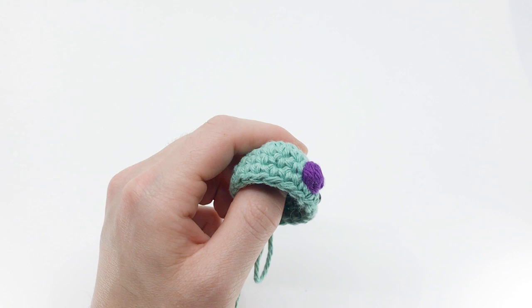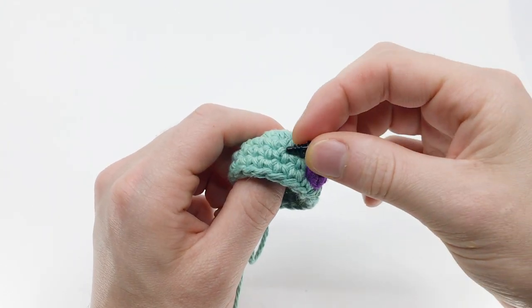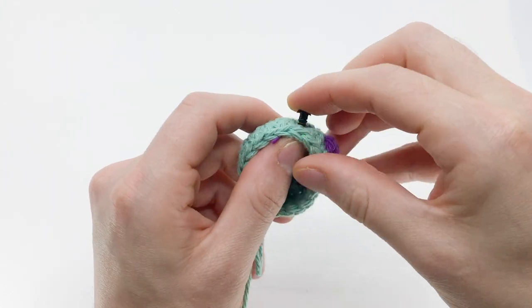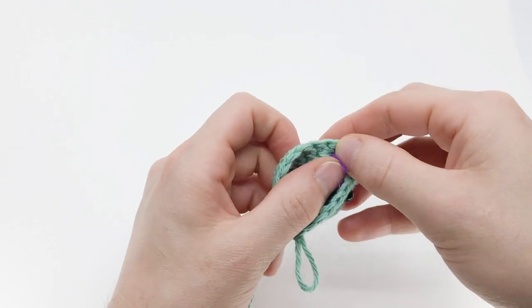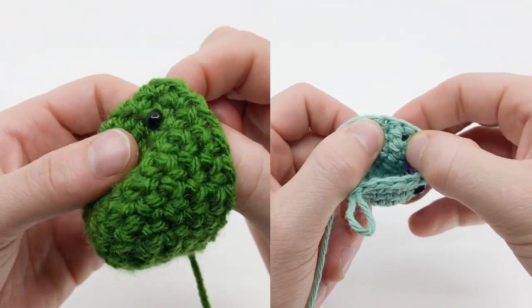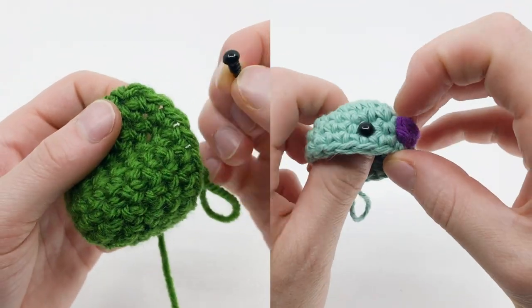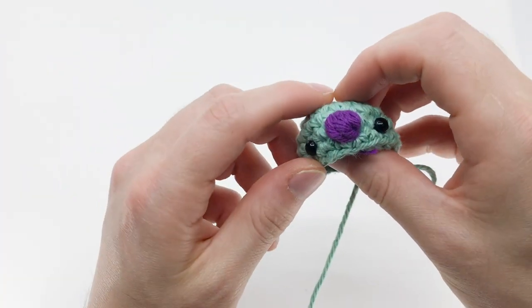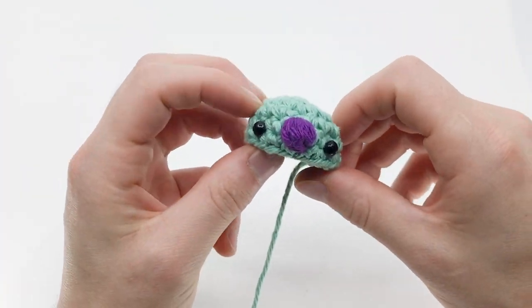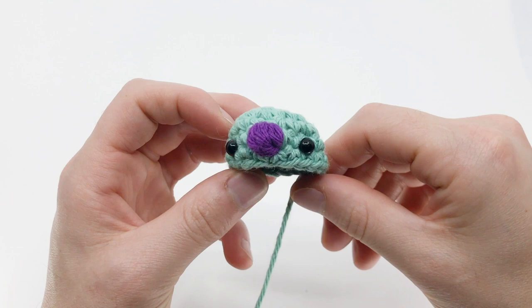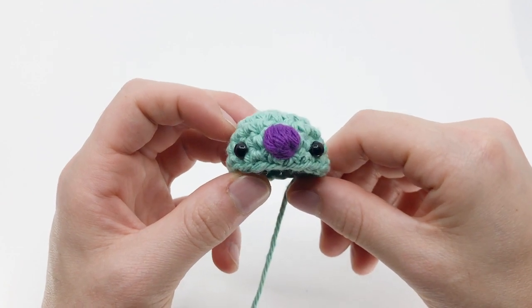To attach a safety eye, stick the pointed end from the front part of the eye through a stitch on your piece. It's best to make sure that your safety eye is bigger than the hole, or it might disappear into your piece. Make sure they're where you want them, because they are very difficult to remove, and be sure that your piece is not stuffed yet, or it could get messy.